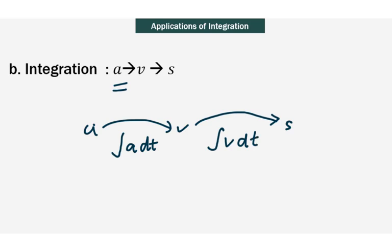Bear in mind that you are actually doing an indefinite integration. Hence, you will be getting what we call an arbitrary constant. So, in many cases, there will be information given to you. Most of the time it will be when t is equivalent to 0 seconds, s is equivalent to 0 meter, or any other information which will help you in getting the arbitrary constant, which is c.